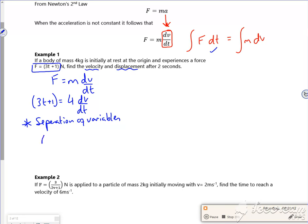t is on the left, so I've got 3t plus 1 dt which I'm going to integrate, and 4 lots of dv's on the right which I'm going to integrate. So that'll give me 3t squared over 2 plus t is equal to 4v plus c.